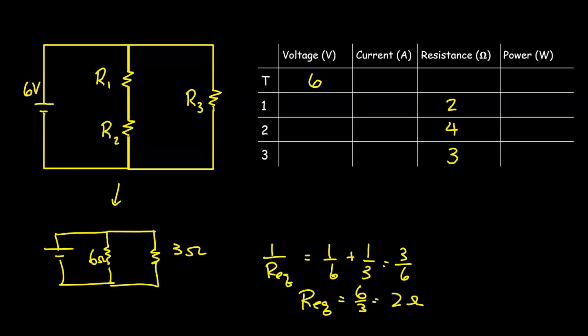The equivalent resistance of this combination circuit is going to be 2 ohms. To find the current, we're going to use Ohm's law, which is V over R. So 6 divided by 2, we get 3 amperes.